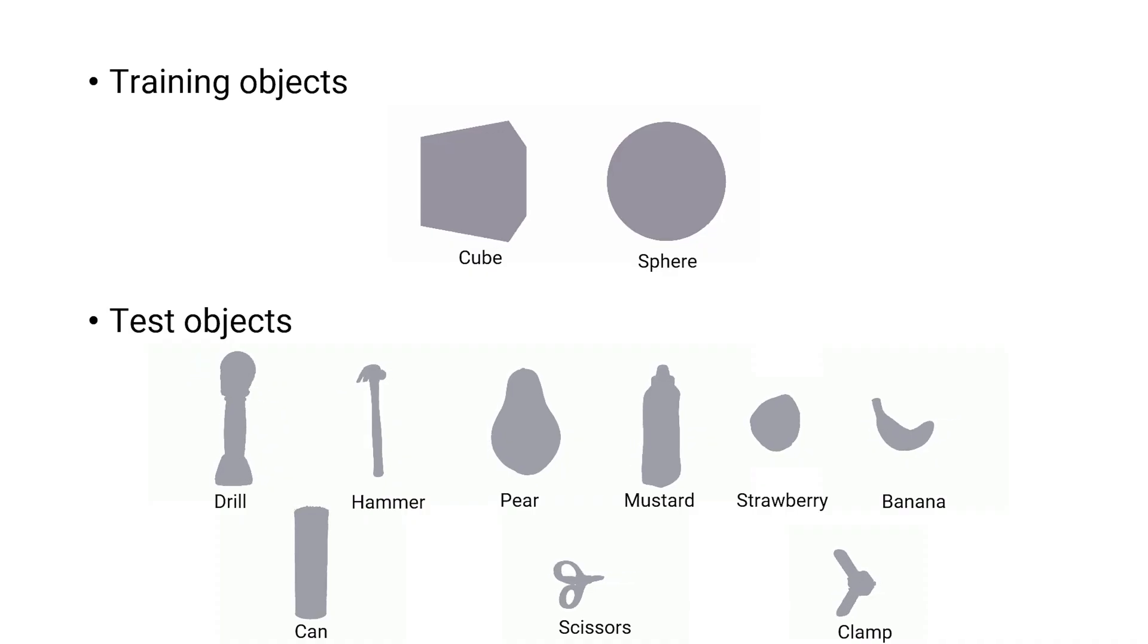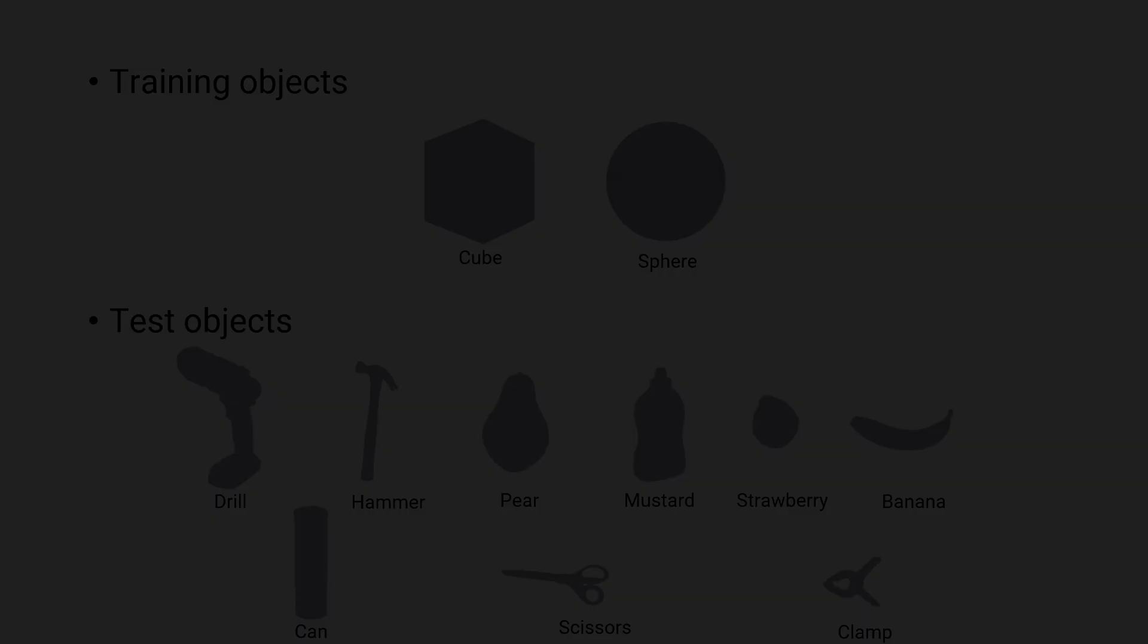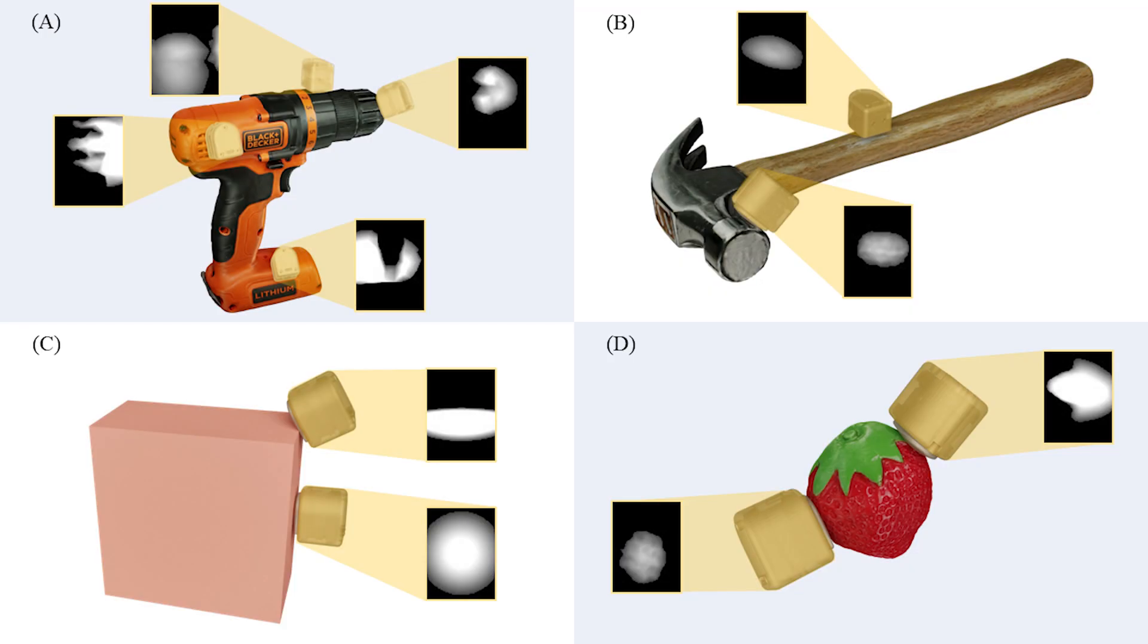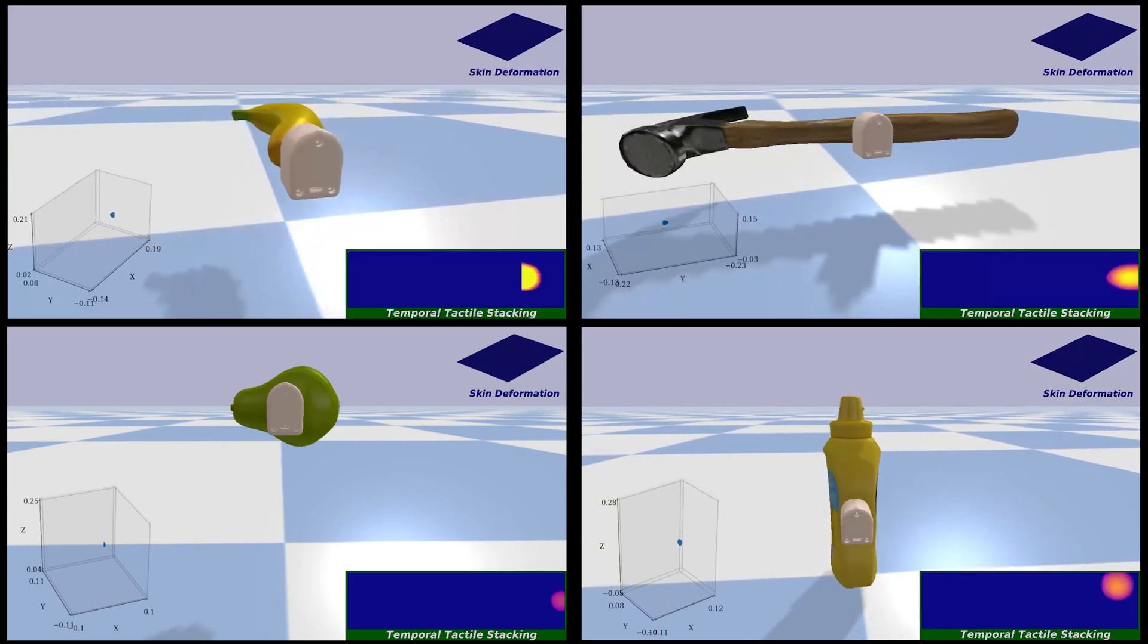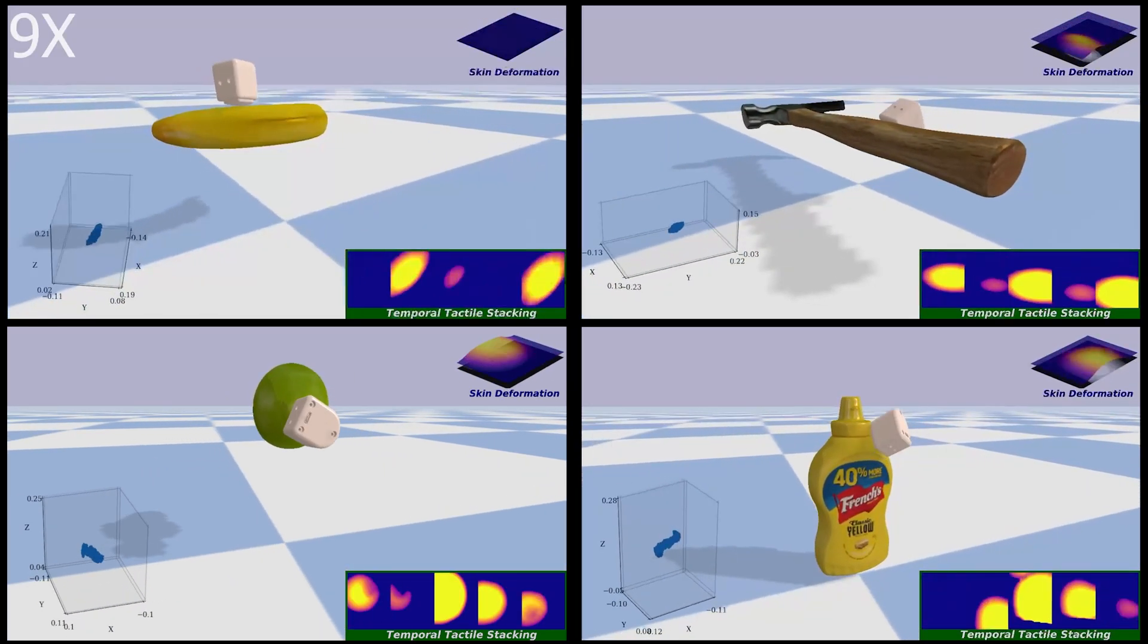To achieve generalization for unknown objects, we trained our model using primitive objects. To assess the model's performance, we evaluate it on YCB objects that were not encountered during training time. This evaluation demonstrates the efficacy of training with primitives, which exhibited generalization capabilities for objects with realistic textures.